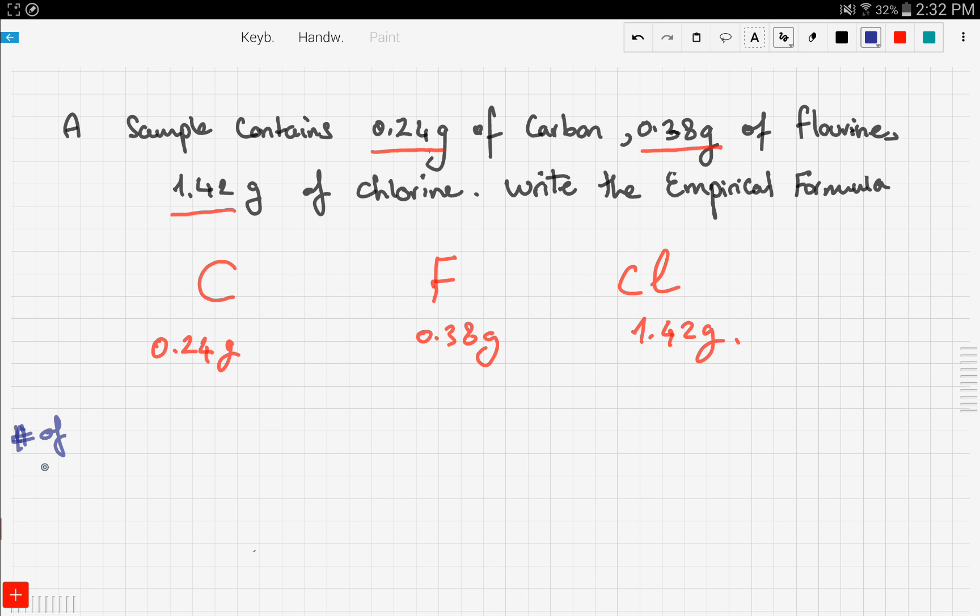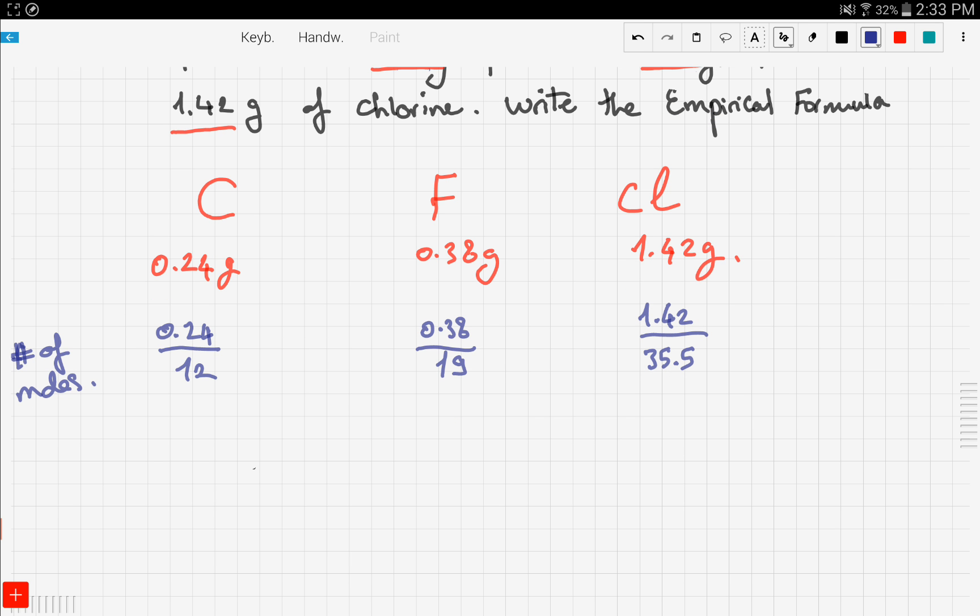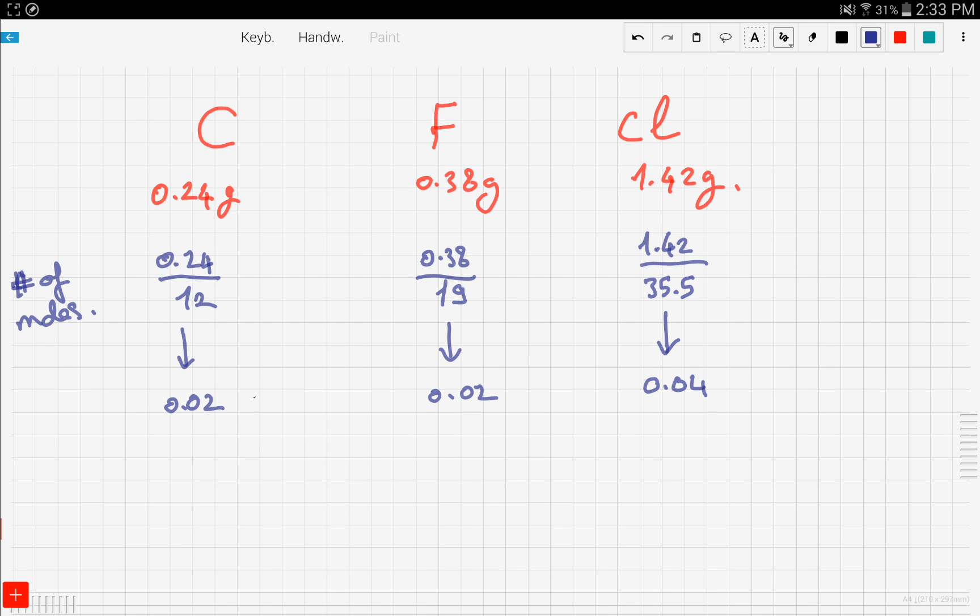The next step is to calculate the number of moles. As we learned in past videos, you need to divide by the molar mass. So let's divide: 0.24 divided by 12, 0.38 divided by 19, and 1.42 divided by 35.5. We get 0.02, 0.02, and 0.04.